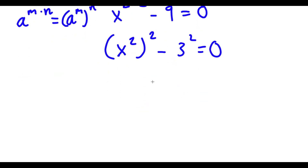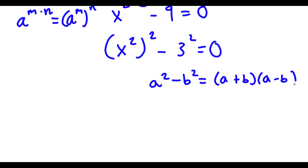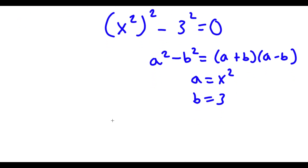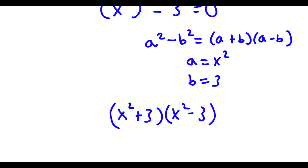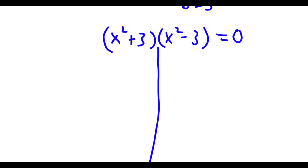Now if I have something in the form a squared minus b squared, this is equal to a plus b times a minus b. So in this case a would be x squared and b would be 3. So now I have x squared plus 3 times x squared minus 3 equals 0. This actually gives me two equations: x squared plus 3 equals 0, and x squared minus 3 equals 0.